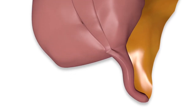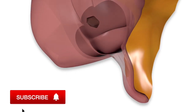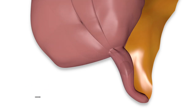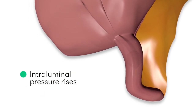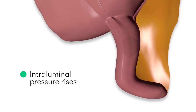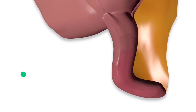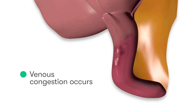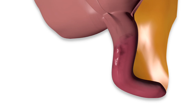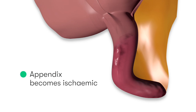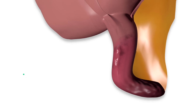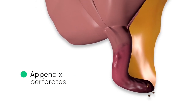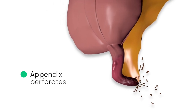But what happens after the appendix gets blocked? Firstly, the intraluminal pressure distal to the blockage increases. This rising pressure starts to prevent the return of blood via the small veins, causing venous congestion. As this congestion increases, the pressure placed upon the appendix walls eventually exceeds the pressure of the arterioles — therefore arteriolar flow decreases, the appendix becomes ischaemic, gangrenous, and then eventually it will perforate.